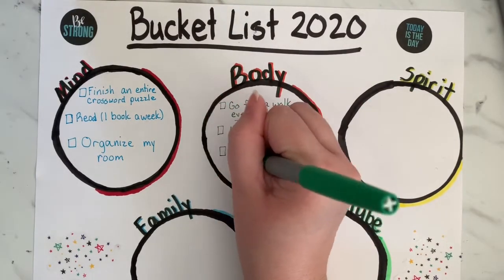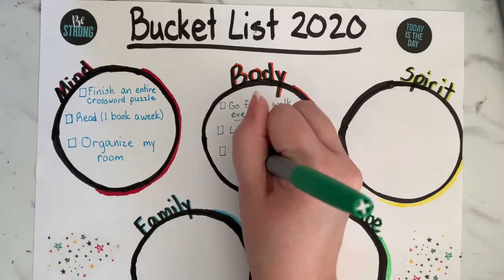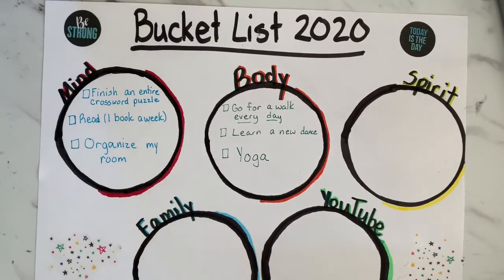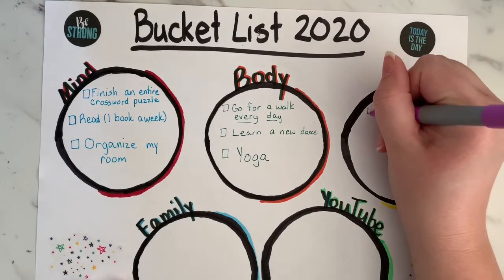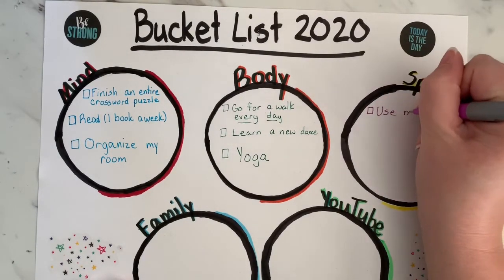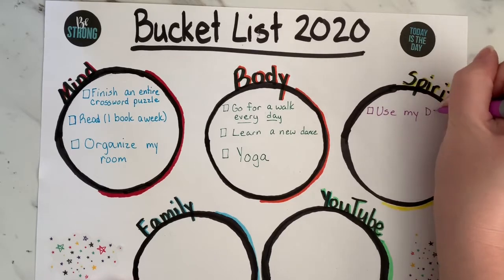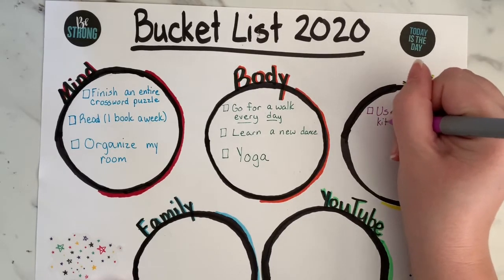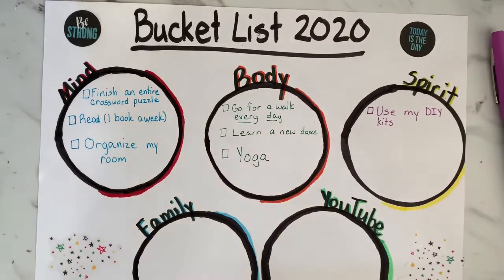The third thing I want to do is try some yoga — I'll link a video below for some kid-friendly yoga. That's just to learn how to stretch and become more flexible. For spirit, I thought about things that would brighten my mood.